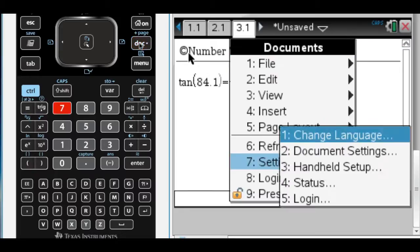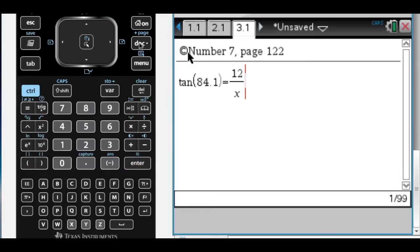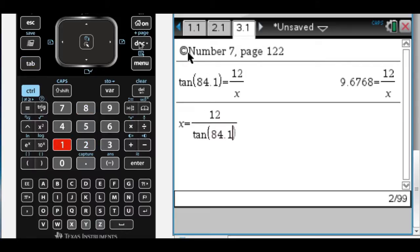So what I'm going to do is I'm going to click doc, and then 7, and then document settings, and then change to degrees. So a tangent of 84.1 degrees is x over 12, and then that means that x is equal to 12 over the tangent of 84.1.